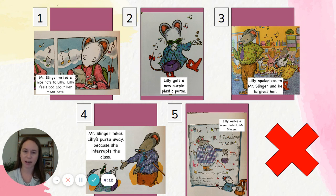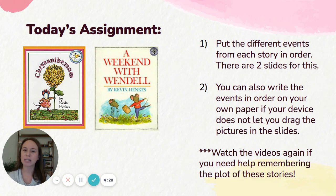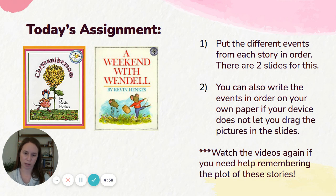You always need to make sure to tell the story in order. That's super important. For your assignment today, you're going to think again about Chrysanthemum and A Weekend with Wendell. You'll put the different events from each story in order. There are two different slides for this where you can drag the pictures and put them in order. You can also write the events in order on your own paper if your device does not let you drag the pictures in the slides. If you can't remember everything that happened in each of these books, you can always watch the videos again if you need help remembering the plot. Have fun, first grade!